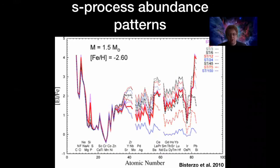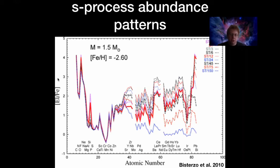If you simulate how this happens in stars, you can predict the relative abundances of different elements. Depending on how stable different nuclei are and how readily they accept neutrons, you can predict the ratio of gold to zirconium, for example. The y-axis shows how much of each element there is, and the x-axis shows atomic number. This s-process is one of the main ways you produce heavier elements like zirconium, lead, and silver.